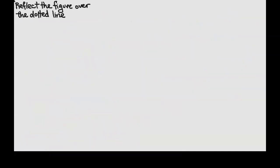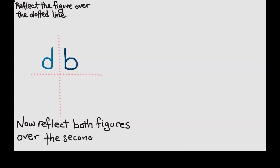Now we're going to reflect the figure over the dotted line. If I reflect a D, it becomes a B. Now we're going to reflect both figures over the second line. When we reflect down, we get a Q and a P.